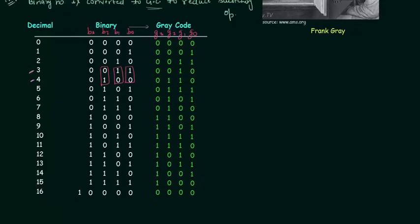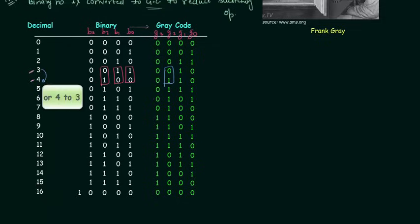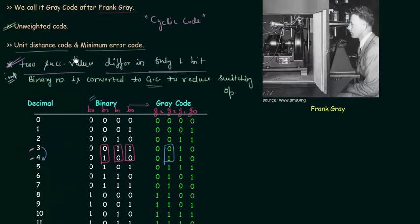Now we will analyze the same case for gray code. Looking at g0, g1, g2, g3: g0 is the same, g1 is the same, g2 is changing, and g3 is the same. So you can clearly see that to switch from 3 to 4 we need to change 3 bits in binary, whereas in gray code we only need to change 1 bit. That's why gray code is called a unit distance code and switching operations are reduced.